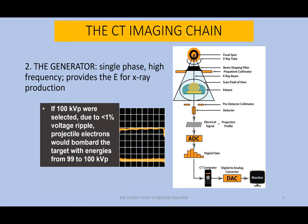The generator is the second component in the CT imaging chain. In modern multi-detector CT, we're talking about a generator that's single phase and high frequency. Test answer: the function of the generator — it's the generator that provides the energy for X-ray production. Test answer: single phase high frequency — that's the type of generator used in modern multi-detector CT. And the function of the generator is that it provides the energy for X-ray production.